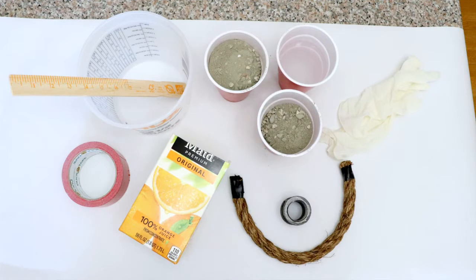Here's what you need. Two cups of Kwikrete 5000 Concrete Mix. One cup of water. A disposable bucket and mixing stick. A thick piece of rope. A metal pipe coupling. A juice container, duct tape, and gloves and paper to protect your surface.